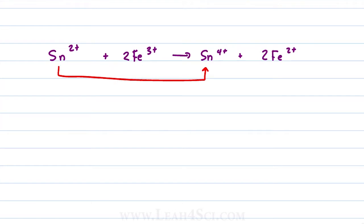Sn or tin is oxidized and iron is reduced. When Sn2+ is getting oxidized, in the process of getting oxidized it is causing the iron to get reduced. And at the same time, when the iron 3+ is getting reduced, it is causing the Sn to get oxidized.